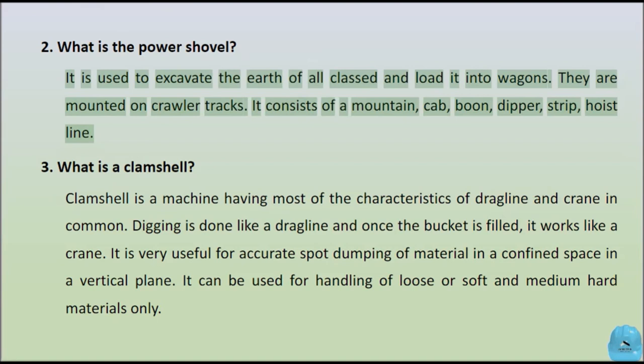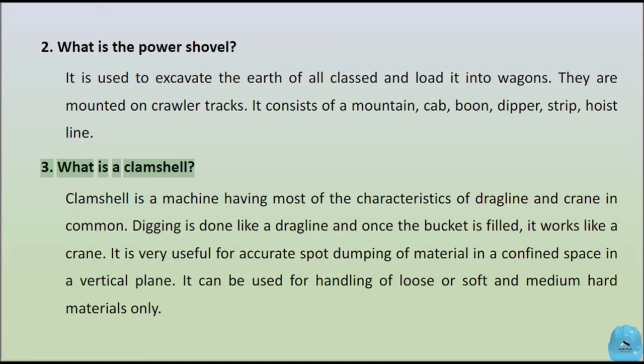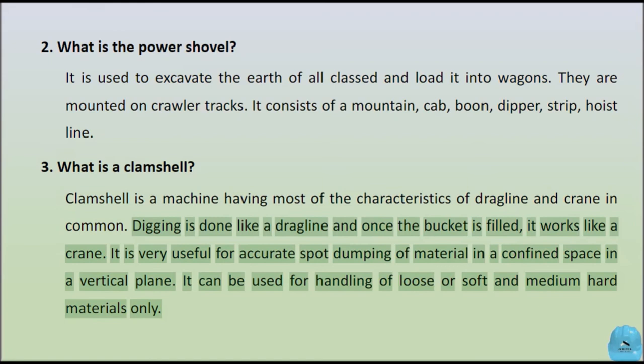Question 3: What is a Clamshell? Clamshell is a machine having most of the characteristics of dragline and crane in common. Digging is done like a dragline and once the bucket is filled, it works like a crane. It is very useful for accurate spot dumping of material in a confined space in a vertical plane. It can be used for handling of loose or soft and medium hard materials only.